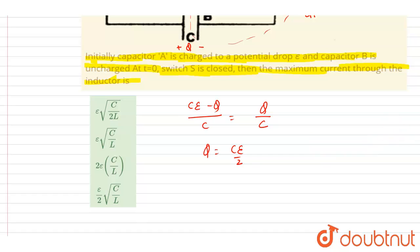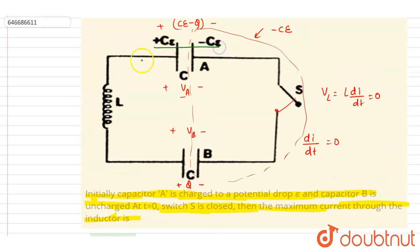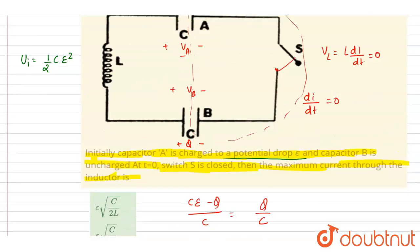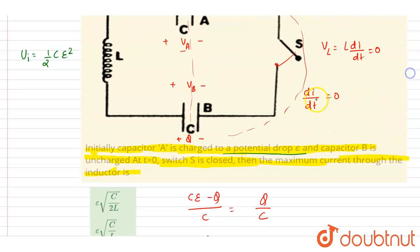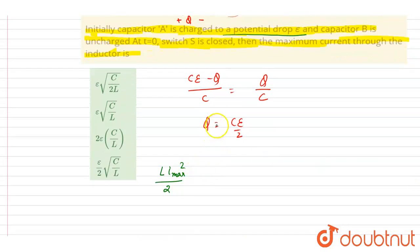Now we apply energy conservation. Initially, only capacitor A was charged with charge Ce, so the initial energy was ½Ce². Finally, the total energy equals the energy stored in both capacitors plus the energy in the inductor, which is ½LI². At the Imax condition, di/dt is zero and each capacitor holds charge q. So: ½Ce² = q²/2C + q²/2C + ½LImax².